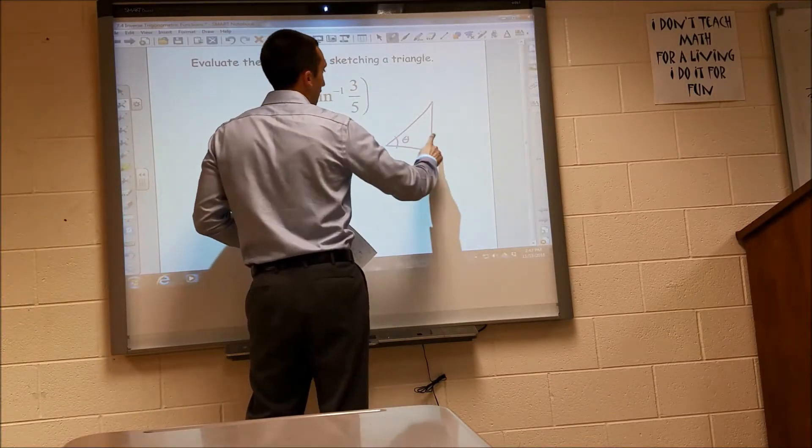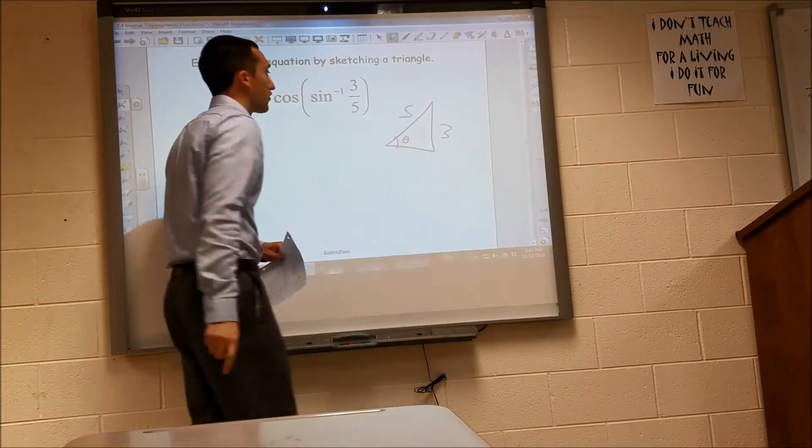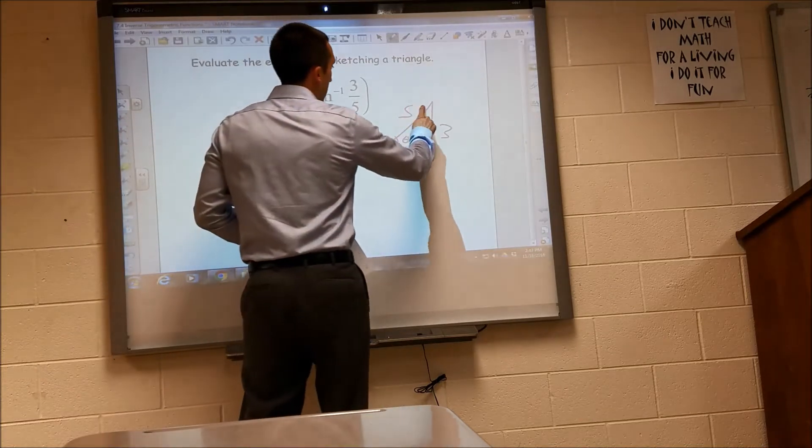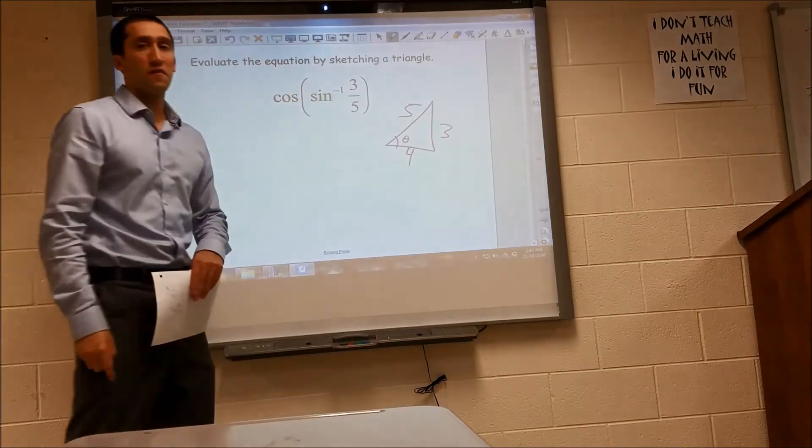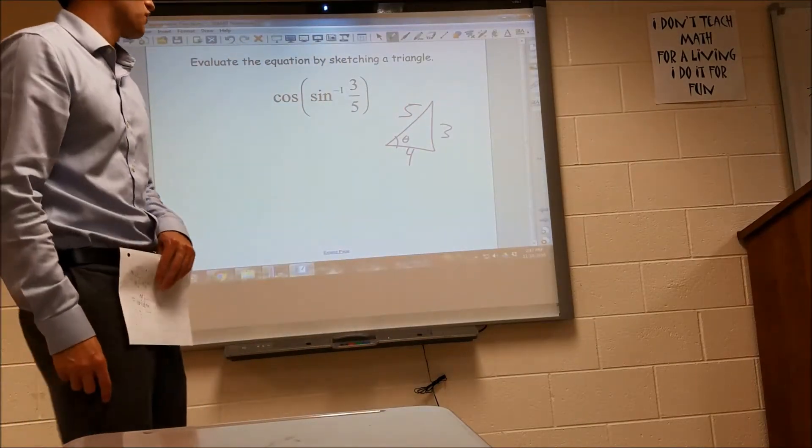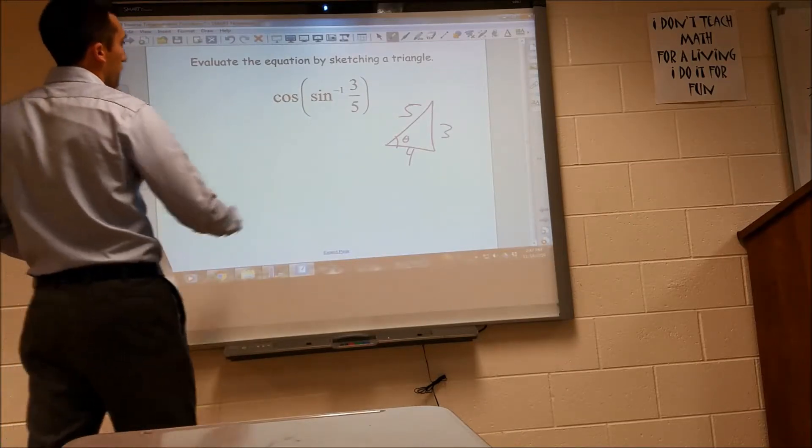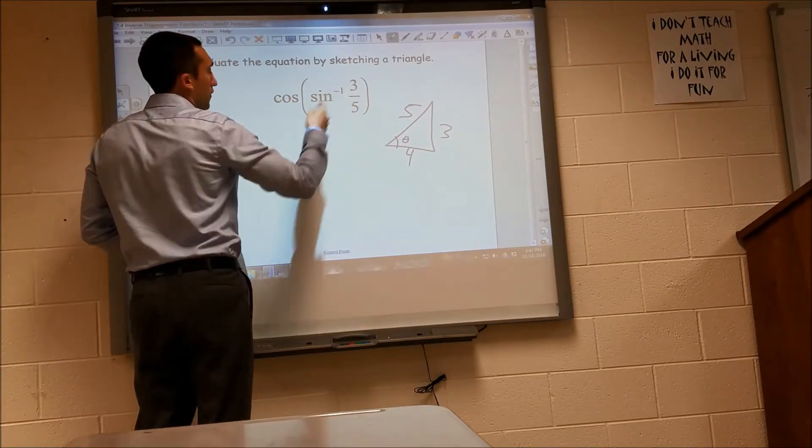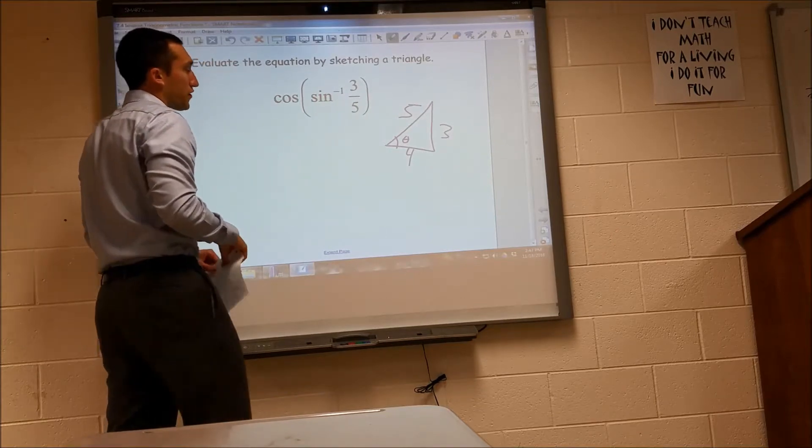So if this is my theta, opposite is 3, hypotenuse is 5. And if you do the Pythagorean theorem, you'll find that my missing leg is 4. So the first thing I'm going to do is the sine inverse of 3 fifths.